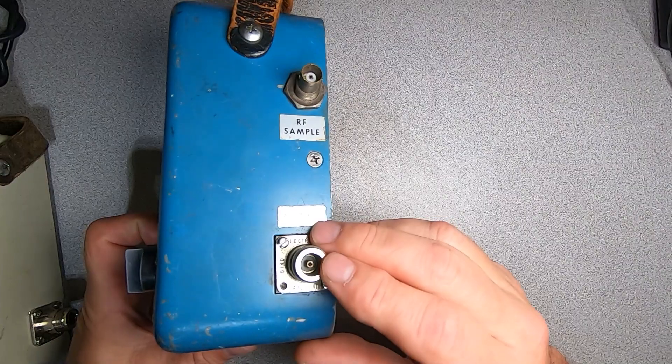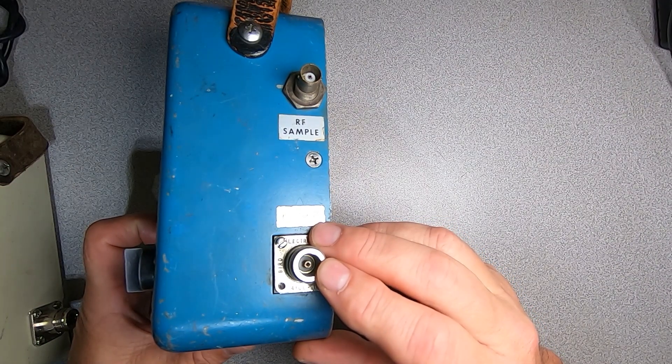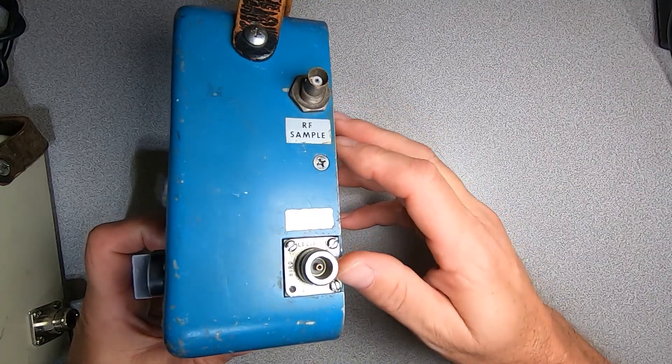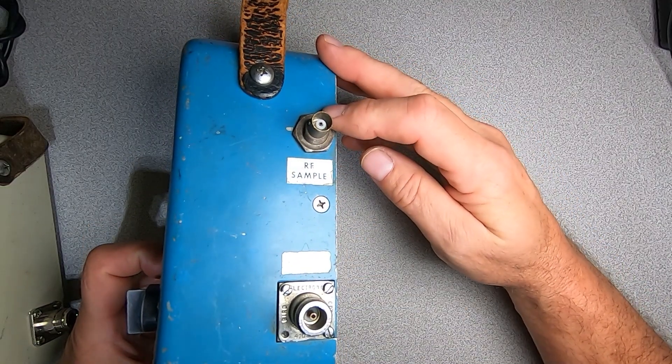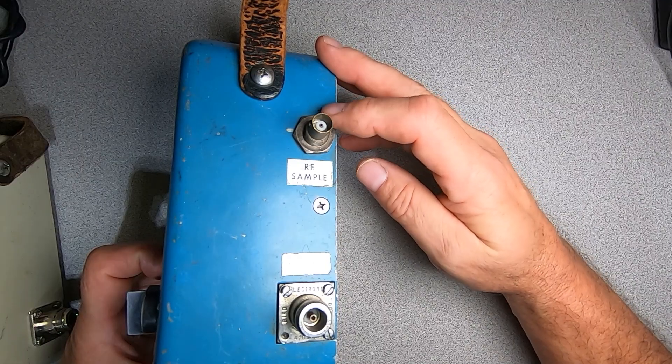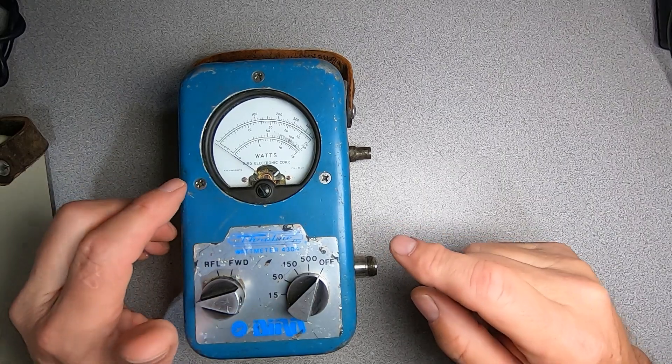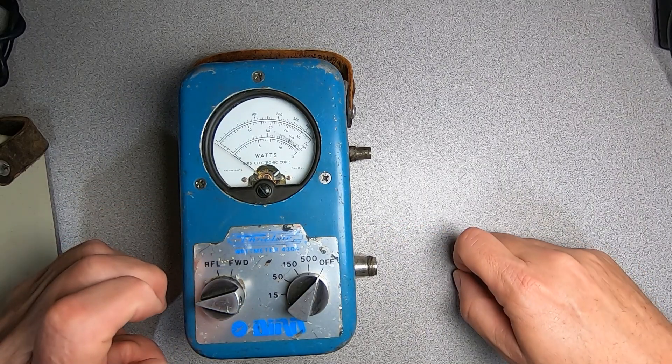This meter features N female connectors, which we can change to another species if desired, just like all the other Bird family of meters. This meter also features a BNC RF sample port, which I believe is 30 dB down from the input power applied to the meter. Now let's open up this meter and see what's going on inside.